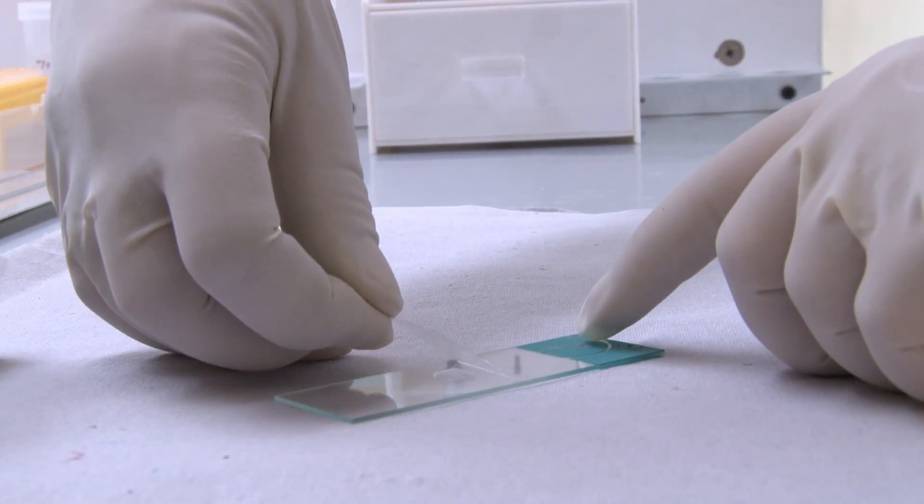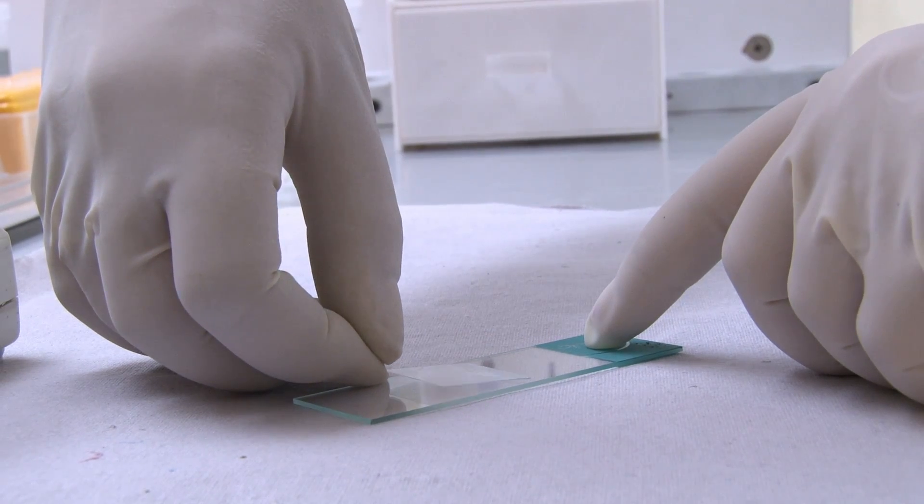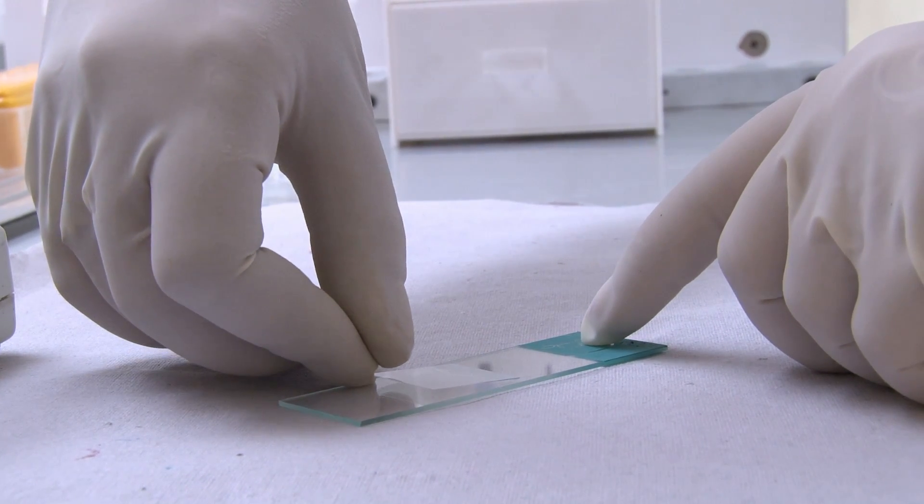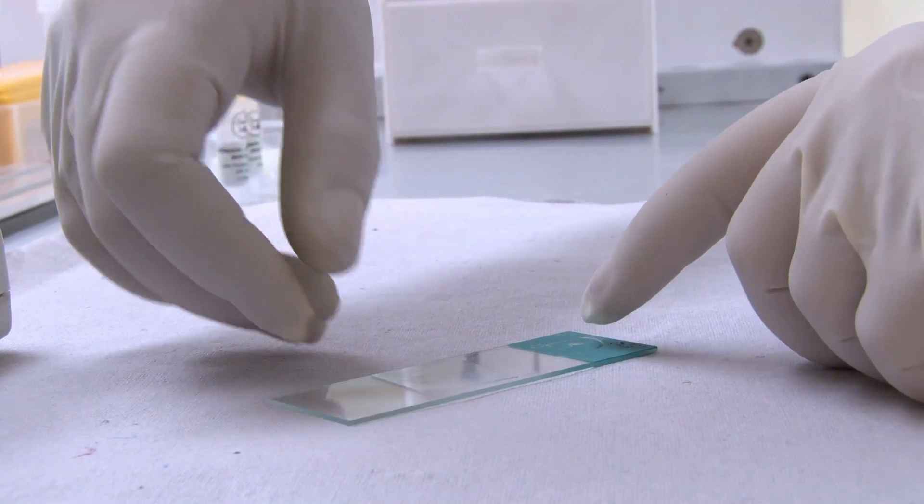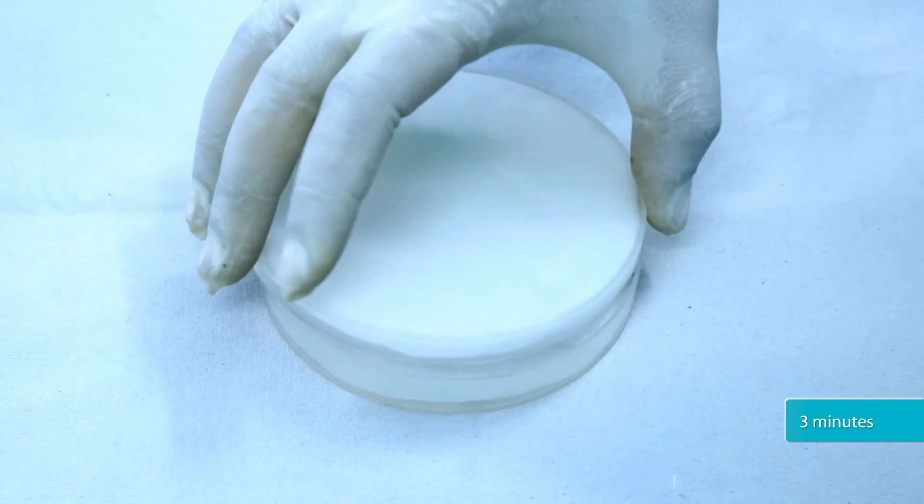Put a cover slip on the slide. Place the slide in the petri dish and incubate for 3 minutes.